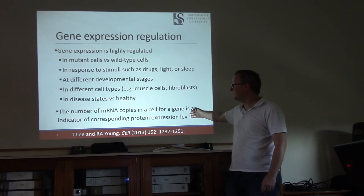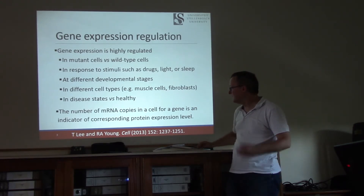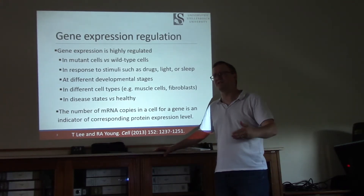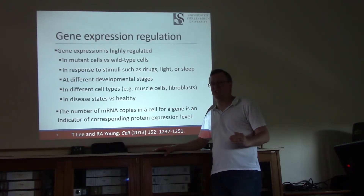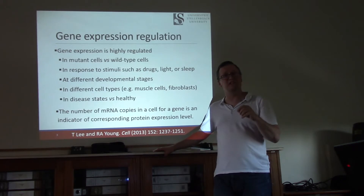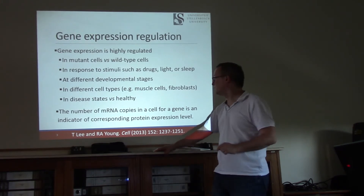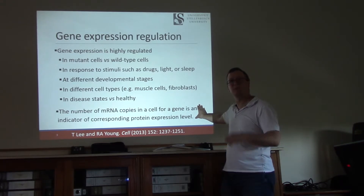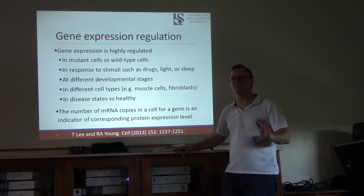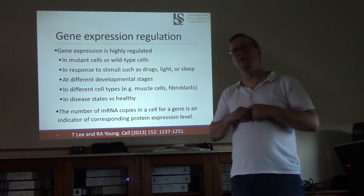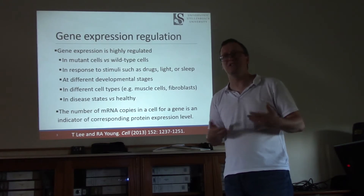Generally speaking, we assume that the number of messenger RNA copies in a cell for a particular gene is our indicator of corresponding protein level — that more transcripts means more protein. In fact, this is a really bad simplification of a very complex process. Messenger RNA may be present yet not translated, and protein may be produced yet rapidly degraded. So while more mRNA generally implies more protein for the same gene, this is only true so far as it goes.